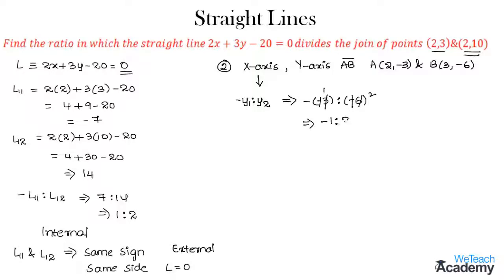So we get the ratio as minus 1 to 2. Here the ratio is in the form of minus L11 to L12 which is less than 0. So we can say that x-axis divides the line segment AB externally.